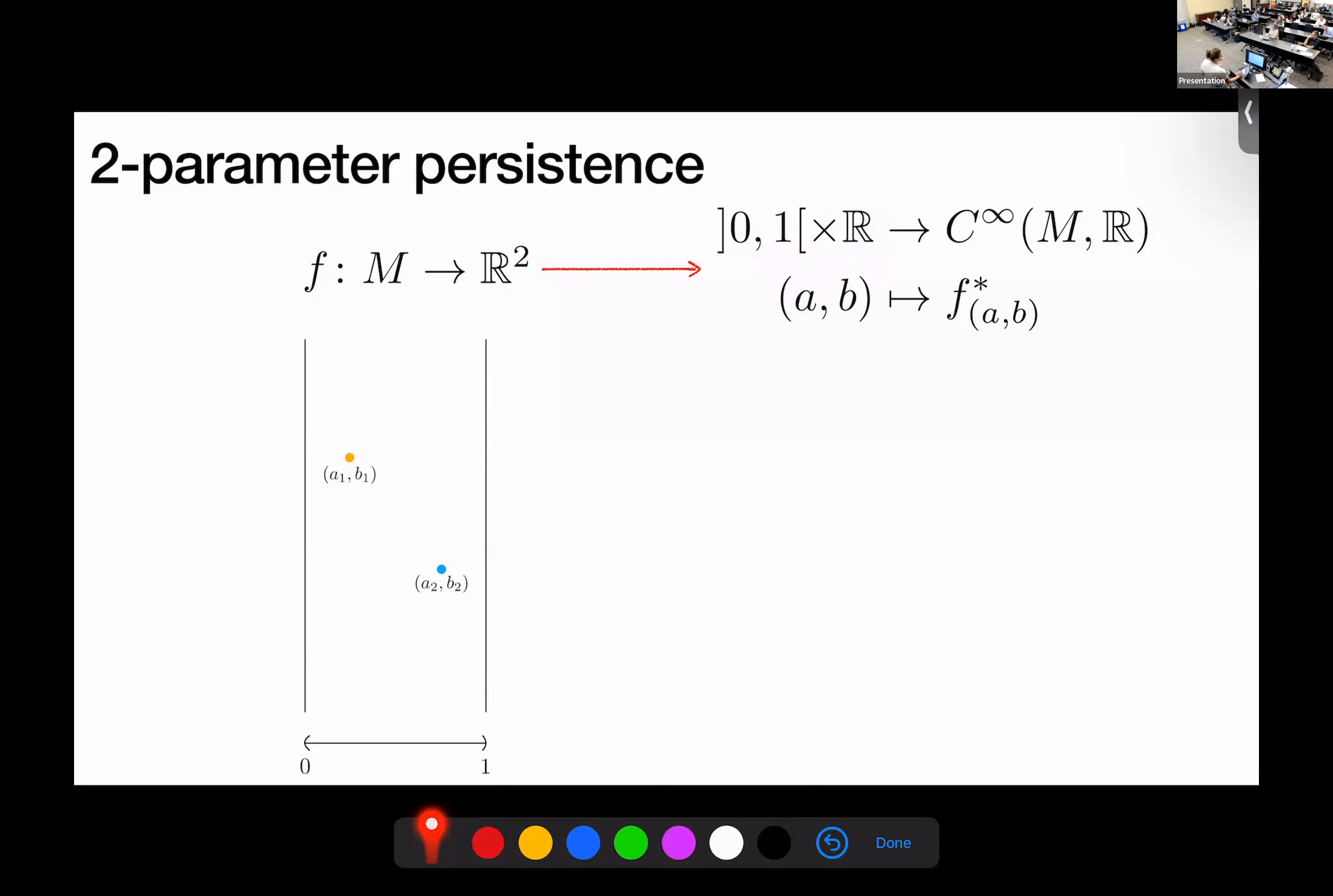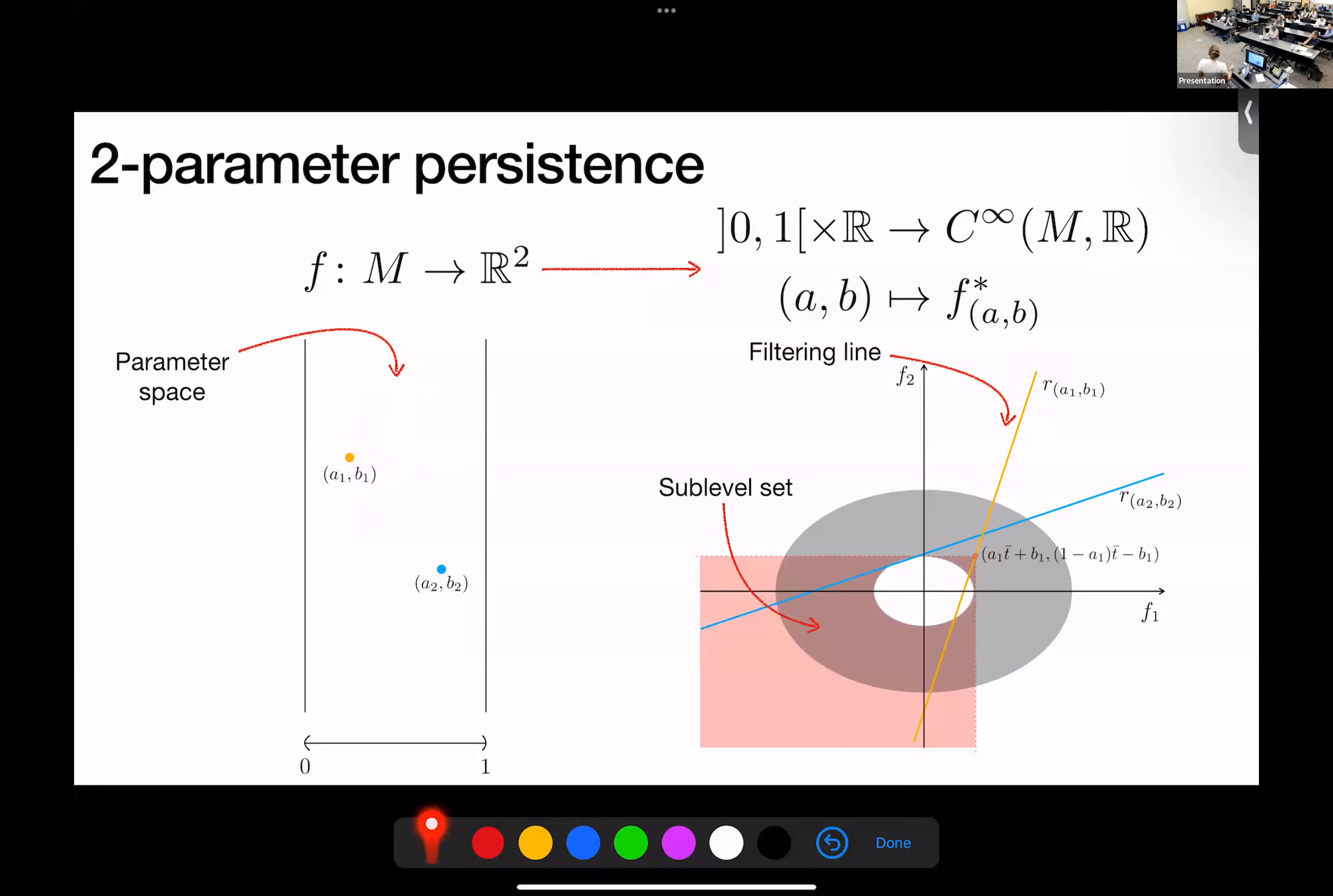So in this product of the open interval 0, 1 times R. And to each of these parameters, it is associated a function F star A. How does that work? So this is our parameter space. And this is the positive slope. So for example, to the point with the orange point A1B1, we have associated a filtering line RA1B1. How does the filtration work? So we filter now the manifold along this line in the following way. So if, for every point on the line, we take the pre-image of whatever we see that is below and on the left of the point. And as soon as we move upward, this point on the line, we have a nested collection of some subsets of the manifold.